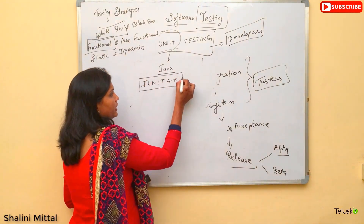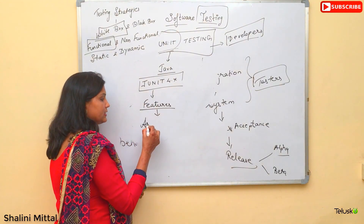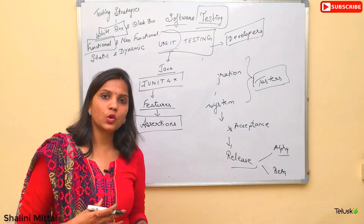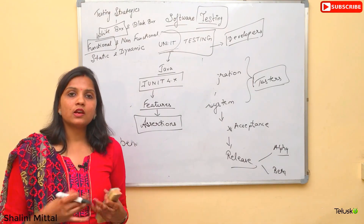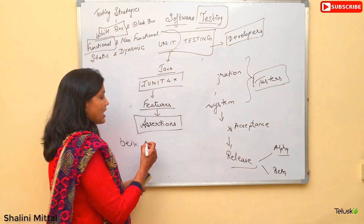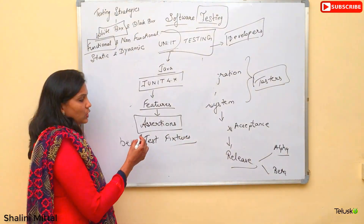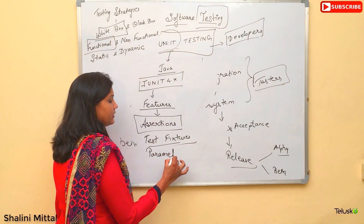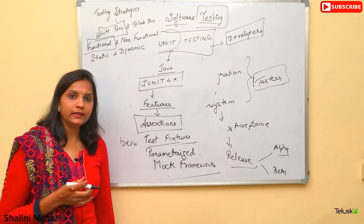JUnit 4 library has several features available. It tests for all assertions — just as when buying something we assert whether it fulfills our requirements, JUnit talks about assertions in the same way. It also has test fixtures, parameterized testing, and mock frameworks which you can use for JUnit tests. We will be covering each and everything in detail, so do not worry if you are unfamiliar with these terms.